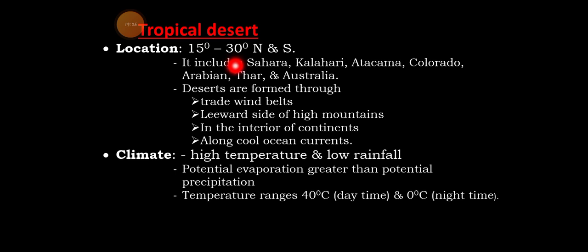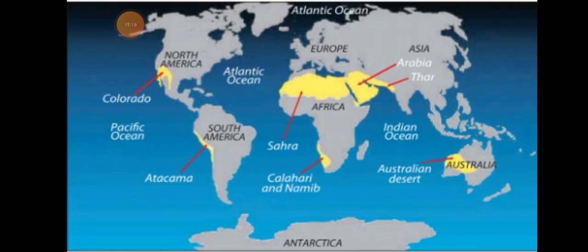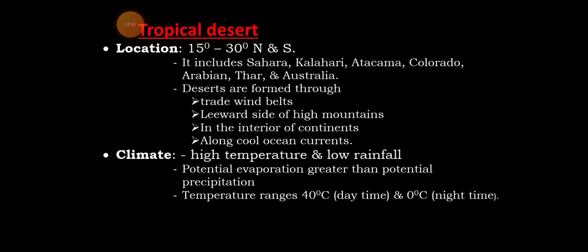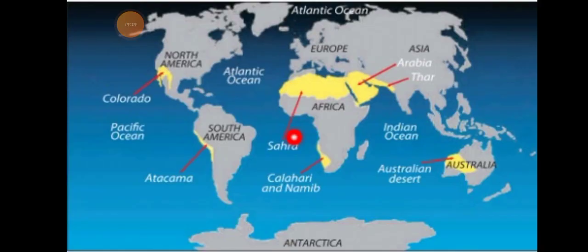Review questions: Question one — what does desert mean? Question two — what is the location of tropical deserts? Question three — deserts are formed as a result of four major causes. What are they?